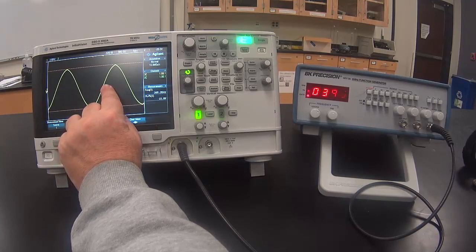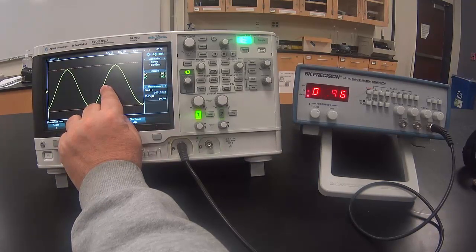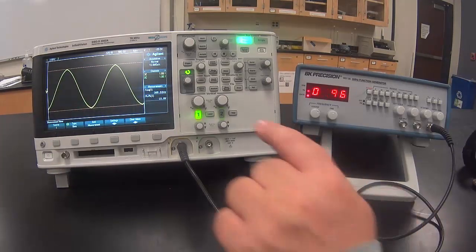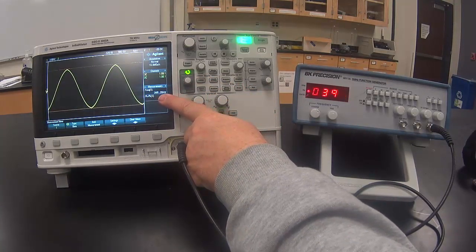I multiply times the time per division up above. That will give me the period of the wave. Divide by one over the period to get the frequency, and the frequency should match this number right here.